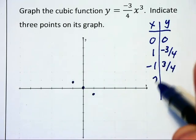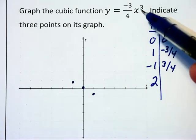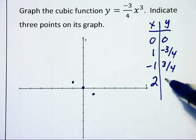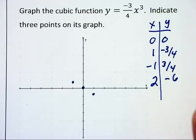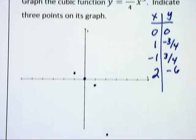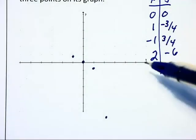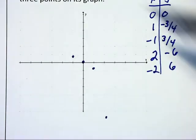Let's try 2. 2 cubes to 8. 8 times negative 3 fourths is negative 6. So 2 negative 6 will be on our graph. I'm going to zoom down there. And we're going to have negative 2 positive 6. Which is up here.